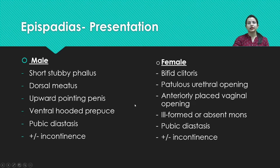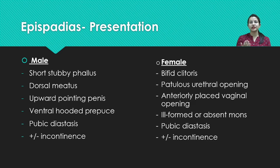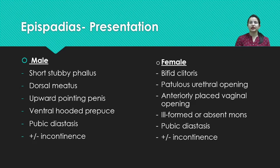For male patients, they will have a short stubby phallus with a dorsally placed meatus and an upward-pointing penis. As discussed in the hypospadias lecture, chordee is the curvature of the penis — here the penis points upward, so these patients have a dorsal chordee. They also have a ventrally hooded prepuce, where the penis is folded upward and the prepuce comes from the ventral surface.